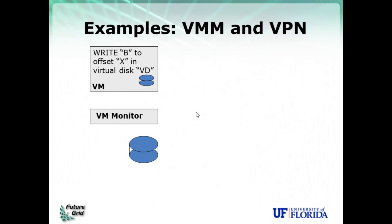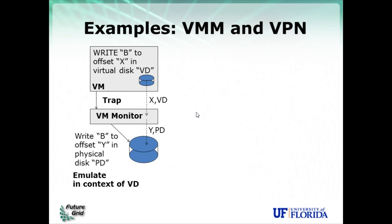To give another example, let's look at how a virtual machine monitor and a VPN would work when emulating instructions. Say a virtual machine is trying to write a piece of data B to some offset X in a virtual disk VD. The job of the virtual machine monitor is to trap this instruction — you don't want the VM writing directly to the physical disk, but to the virtual disk. When trapping, it maps offset X in virtual disk VD to offset Y in the physical disk, and then issues the instruction to the physical disk.